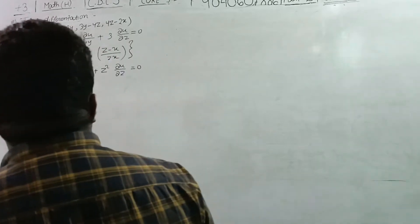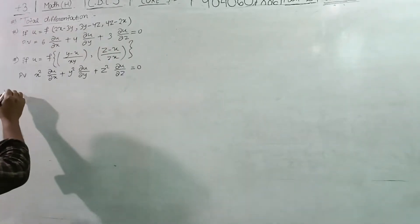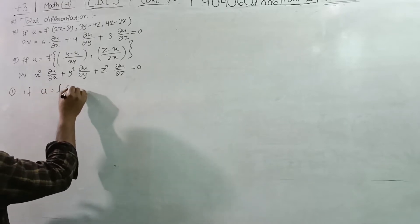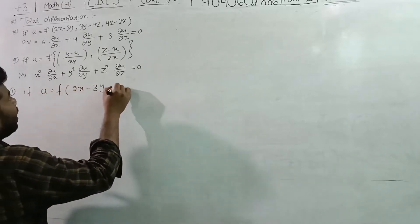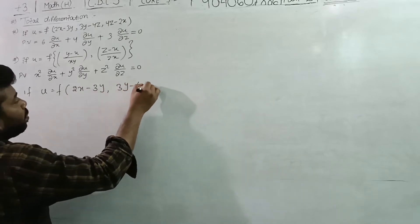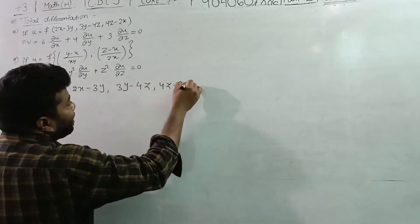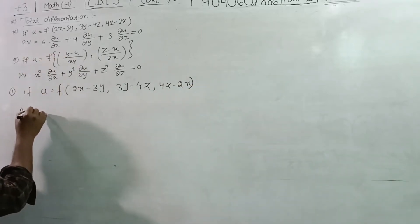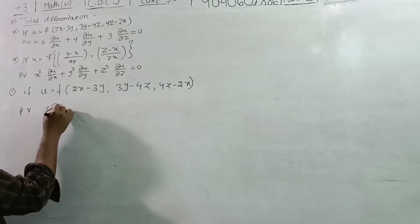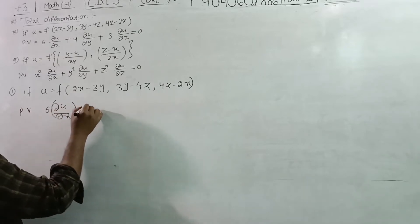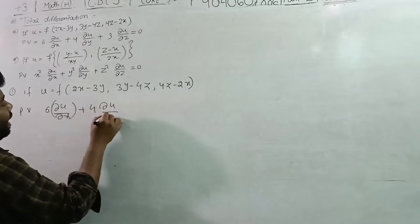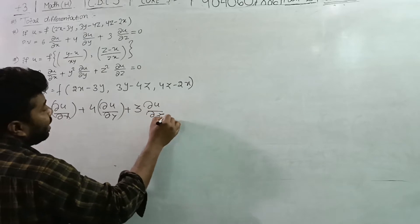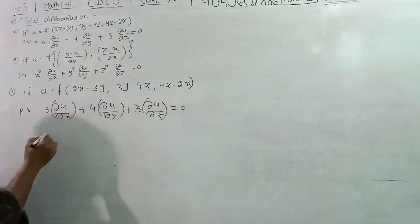Let's see: if u is equal to f of (3y minus 4z, 4z minus 2x, 2x minus 3y), let's prove that 6 del u by del x plus 4 del u by del y plus 3 del u by del z is equal to 0. Let's start.